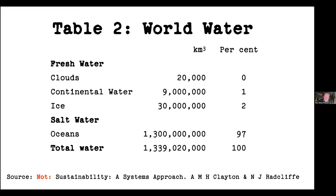The table he wanted to include showed the amount of water on Earth in different forms: clouds at about 20,000 cubic kilometers, continental water and rivers at about 9 million cubic kilometers, ice at about 30 million cubic kilometers, and oceans at about 1.3 billion cubic kilometers. The total he wanted to write was 1,339,000,020,000 cubic kilometers. I refused to include that table because every digit in that final row comes from a different part of the data — the 1.3 billion cubic kilometers of ocean water is not accurate to six significant figures, so you can't meaningfully add 20,000 to it.